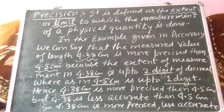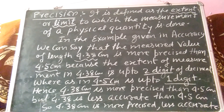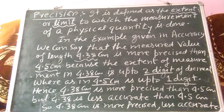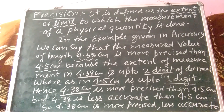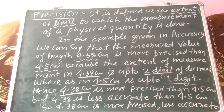But 4.38 is less accurate than 4.5. So 4.38 is more precise but less accurate, while 4.5 is more accurate but less precise. This means precision depends upon the least count or resolution of the instrument — the extent to which you are measuring the physical quantity. Thank you.